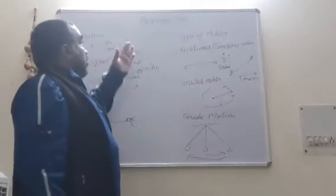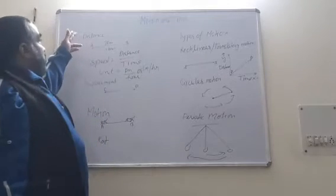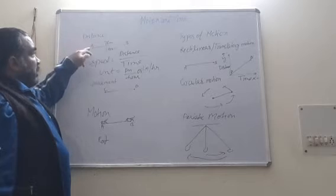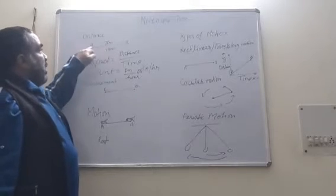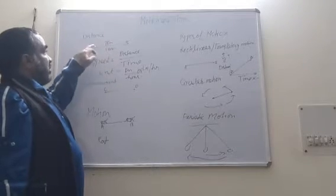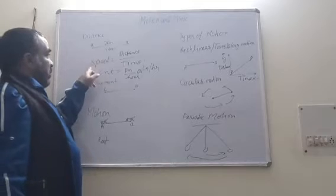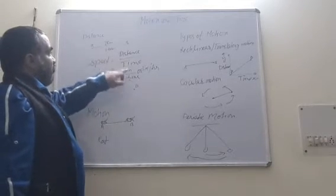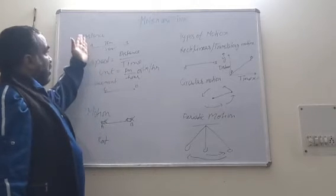Today our topic is motion and time. First topic is distance. When an object travels from point A to point B and it covers 7 km in one hour, then we can calculate speed by distance upon time. We can put 7 here and time 1 hour, then we can get the speed of the object.